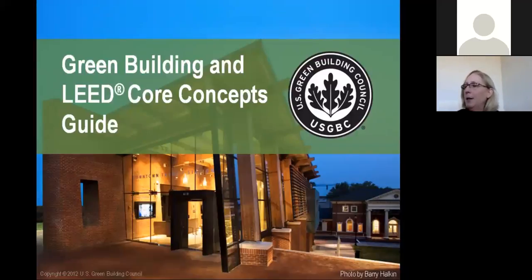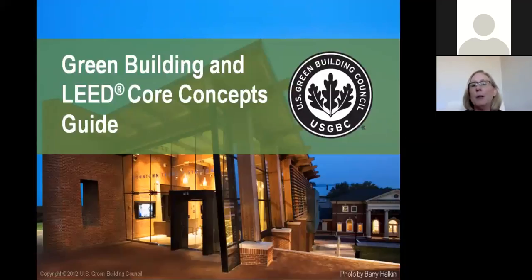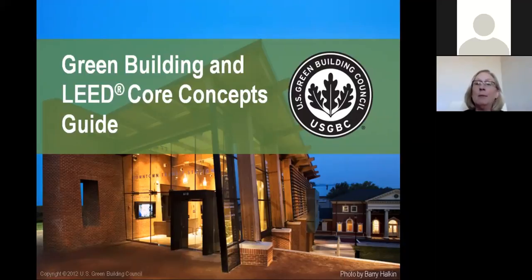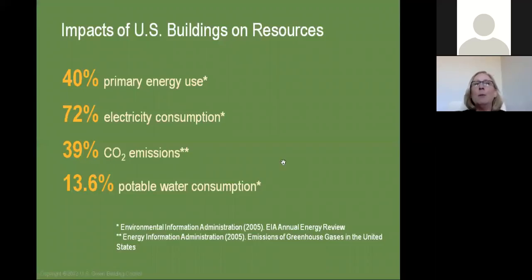That covers the basics on how to study for and take the exam. Now we're going to move into some of the basic concepts about LEED and the types of information you'll learn during your studies for the LEED green associate. At the green associate level, you get a very good understanding and overview of all the categories. One of the first core concepts is the impacts of U.S. buildings on resources: U.S. buildings consume 40% of all energy use, 72% of electrical consumption, represent 39% of our CO2 emissions, and consume 13.6% of our potable water.